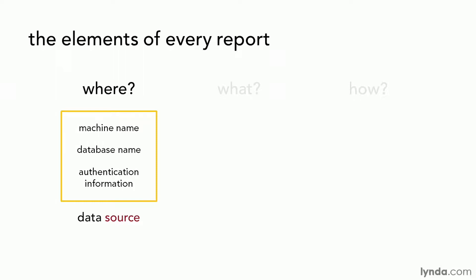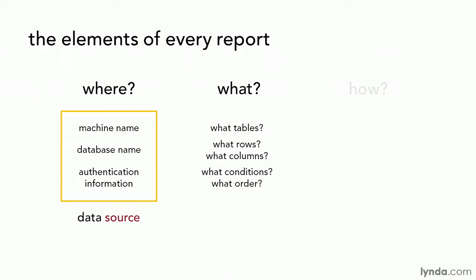So if that's the where, the next step is what — what is your data? You might think you just provided this, but you didn't. Our data source is just us pointing to the database, saying where it is and how we connect to it. But we don't want the entire contents of that database dumped out on a report. So in the what step, we specify exactly what data we want: what tables, what rows, what columns, in what order, with what conditions. This is the subset of data we're interested in, and this is called the data set.